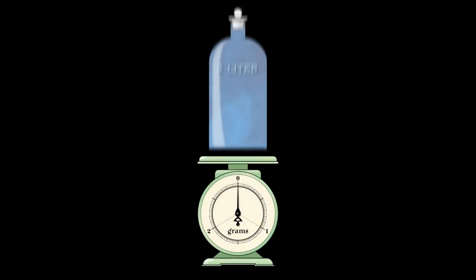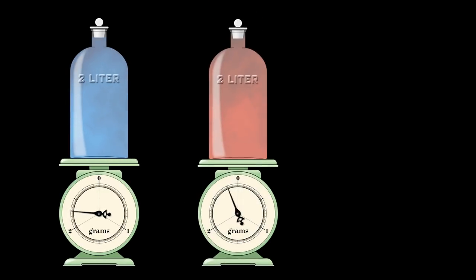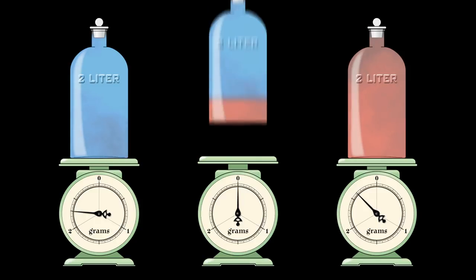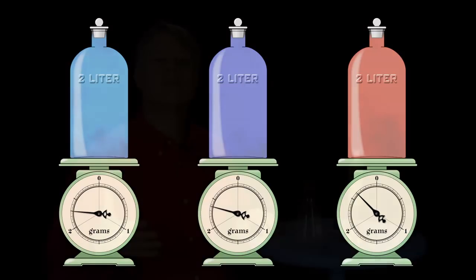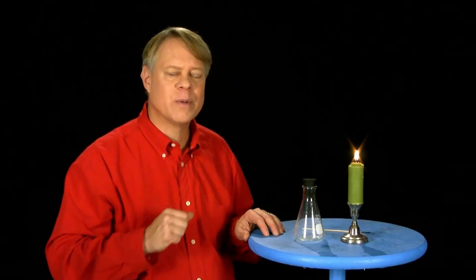Two liters of nitrogen weighs roughly 2.29 grams. The oxygen is heavier. Two liters of it weigh about 2.62 grams. Two liters of air weigh about 2.37 grams. You might ask, how do you weigh gases? I will show you. It's very simple and easily done.